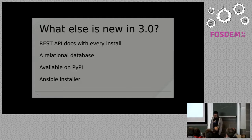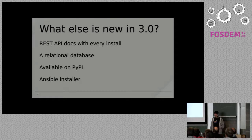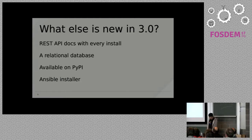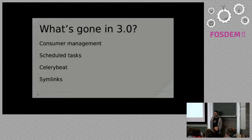We decided that we want to make Python our primary packaging method, so all of our builds are uploaded to PyPI and you can use pip to install Pulp 3. We're also including an Ansible installer that will install using some Ansible roles that we publish to Galaxy, and it also installs some config files that you need.